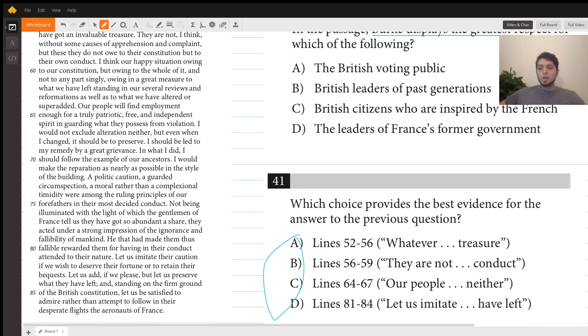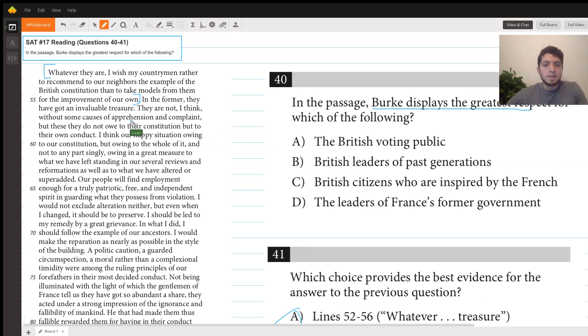B, lines 56-59 says 'In the former they have got an invaluable treasure. They are not I think without some causes of apprehension and complaint, but these do not owe to their constitution but to their own conduct.' So here Burke is saying the British have an invaluable treasure in their constitution. He admits there's some causes of apprehension and complaint, but the things that are wrong are not because of the constitution but because of their own conduct. Any issue they have is not because of their constitution but because of their own actions.